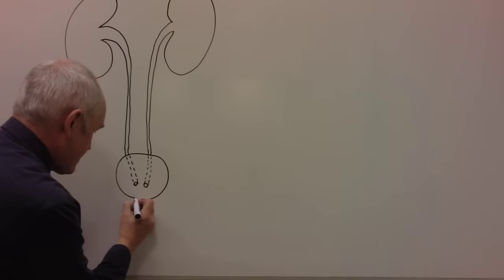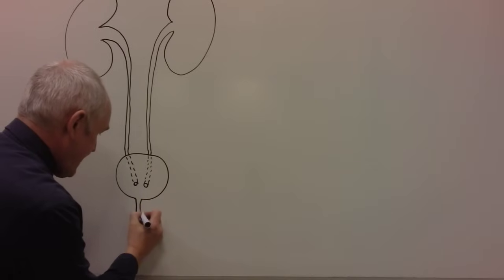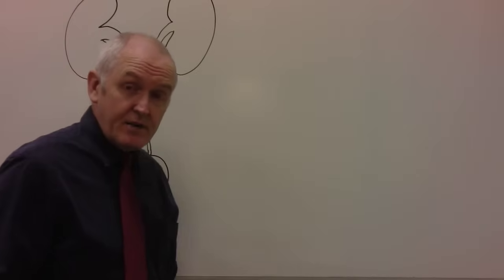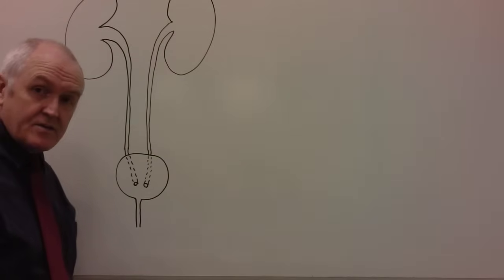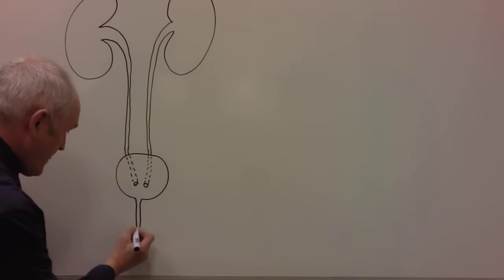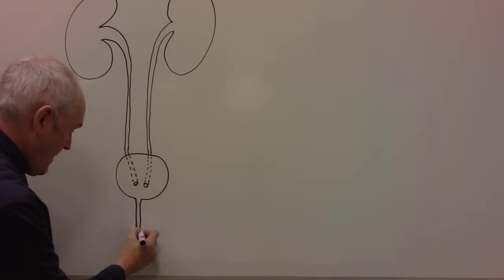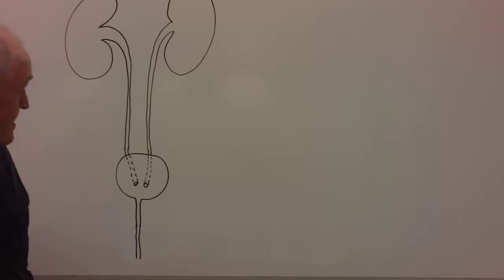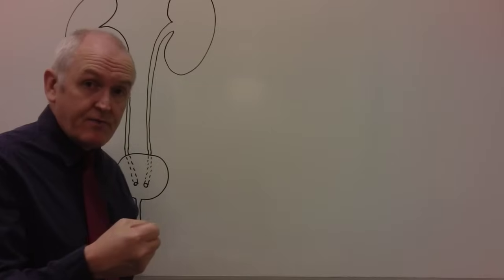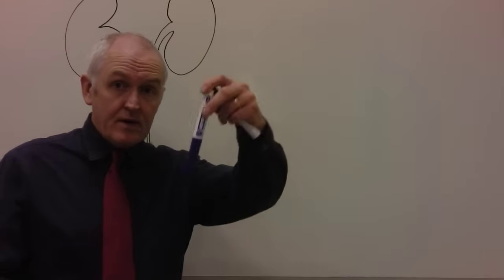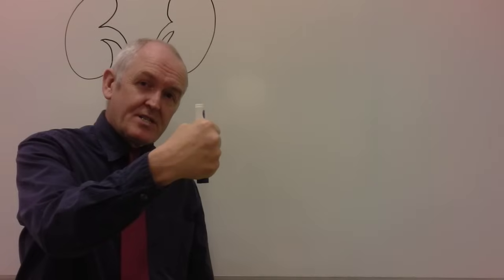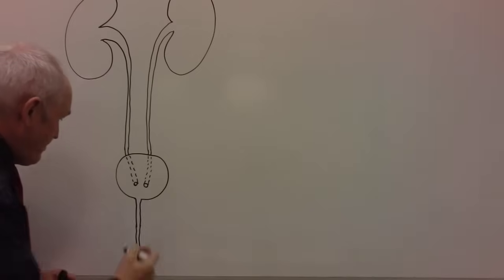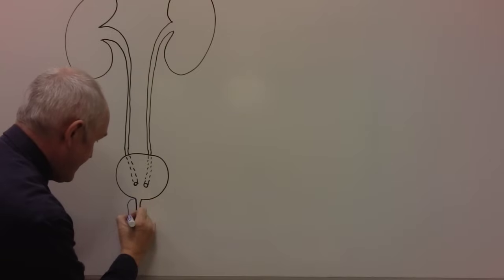The entrance or exit from the bladder is the urethra. In women the urethra is relatively short; in men it's going to be longer. In men, the prostate gland surrounds the top of the urethra — the prostate gland actually surrounds the urethra in men.